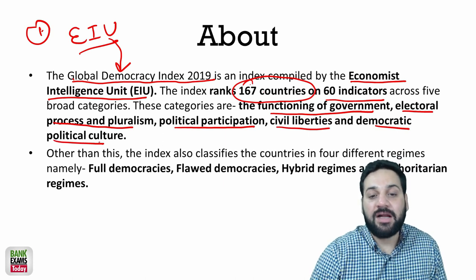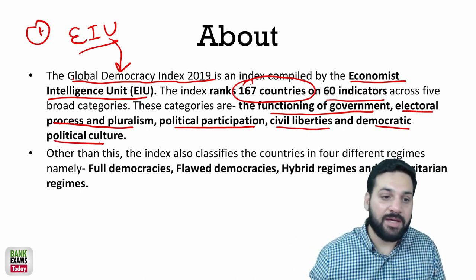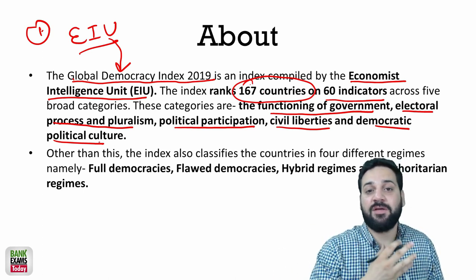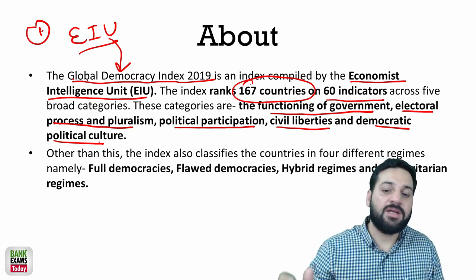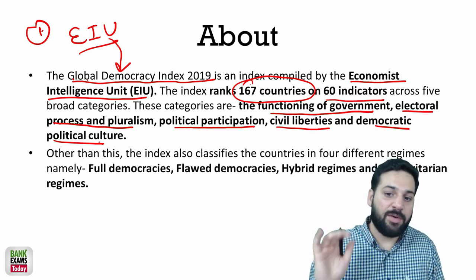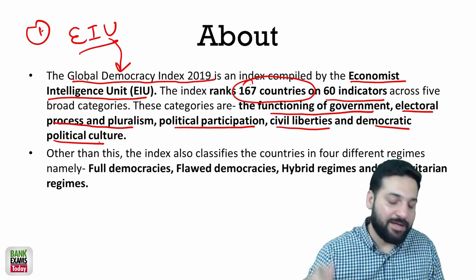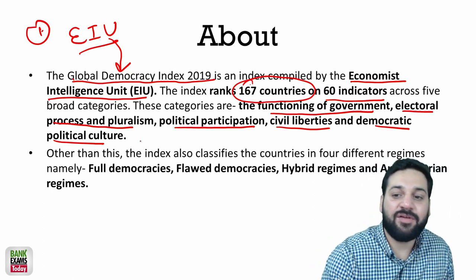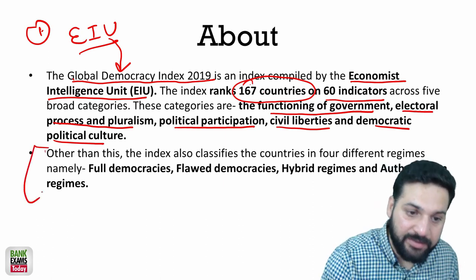Functioning of government looks at how the government is working. Electoral process assesses whether it is transparent and fair. Political participation covers the participation of all genders and weaker communities. Civil liberties includes media freedom. Democratic political culture examines the political culture of the country. Based on these 60 indicators, the countries are classified.